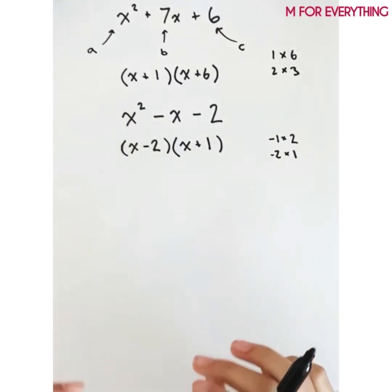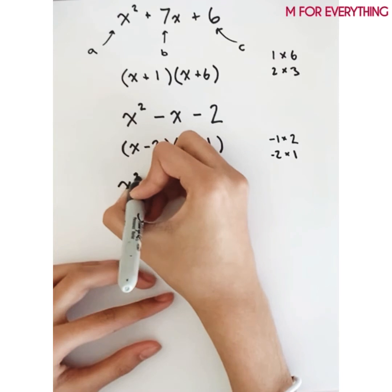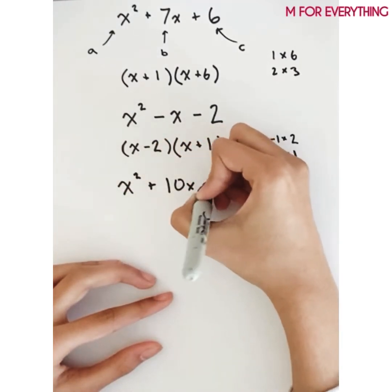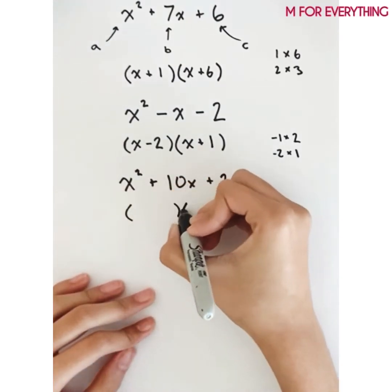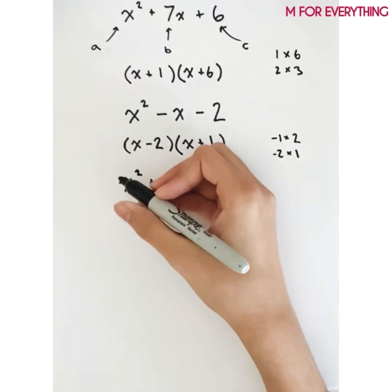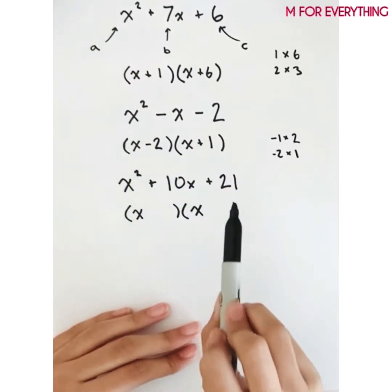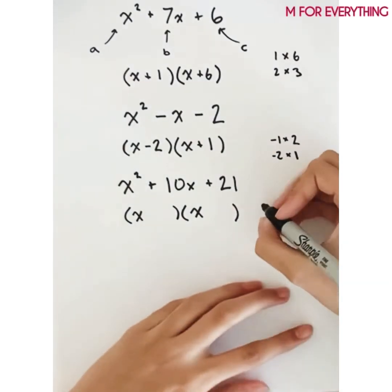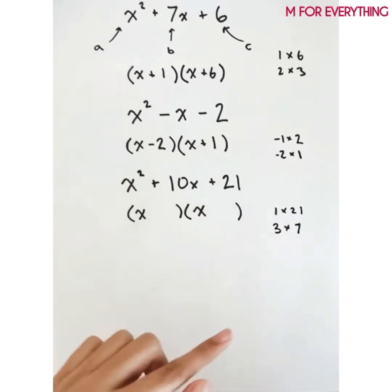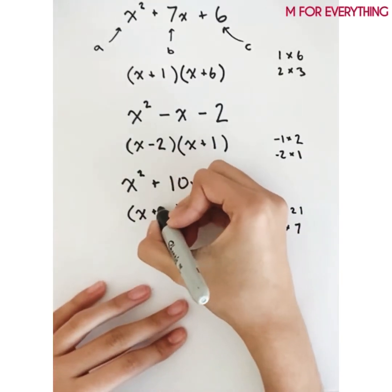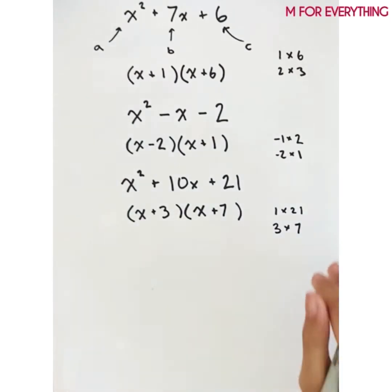Let's do one more before moving on to when 'a' is not equal to 1. Say we had x squared plus 10x plus 21. We put it into two parentheses, both starting with x. We need something that multiplies to 21 and adds to 10. The multiples of 21 are 3 times 7, which works because 3 plus 7 equals 10 and they're both positive. So the answer is (x+3)(x+7).